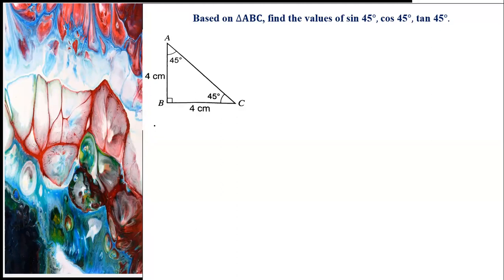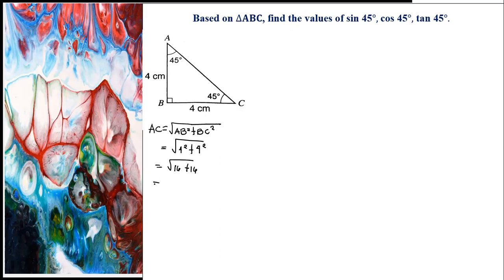Apply the Pythagorean theorem: AC is equal to the square root of AB squared plus BC squared. AB has a measurement of 4, so 4 squared plus BC, also 4 centimeters, so 4 squared. Square root of 4 squared is 16, and 4 squared is also 16. Adding them gives the square root of 32. Since 32 is not a perfect square, the measurement of line AC is equal to square root of 32 centimeters.